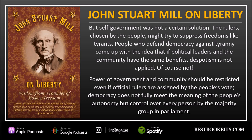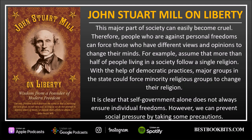But self-government was not a certain solution. The rulers chosen by the people might try to suppress freedoms like tyrants. People who defend democracy against tyranny argue that if political leaders and the community have the same benefits, despotism is not applied. But power of government and community should be restricted even if official rulers are assigned by the people's vote. Democracy does not fully meet the meaning of the people's autonomy, but rather control over every person by the majority group in parliament. This major part of society can easily become cruel, forcing those with different views to change their minds. For example, if more than half the people follow a single religion, major groups in the state can force minority religious groups to change their religion. It is clear that self-government alone does not always ensure individual freedoms.